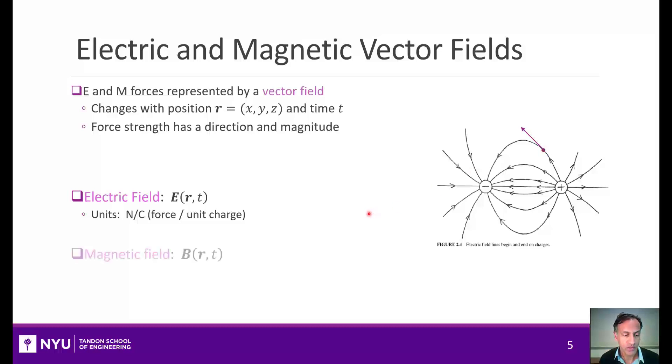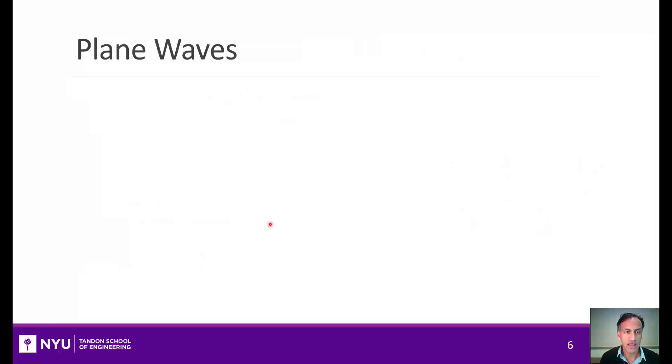Similarly, the magnetic field operates or acts upon moving particles and it's the force per unit charge per unit velocity. So it has units of newtons per ampere meter or teslas. And they have the notation E and B, so you'll often hear them called the E field and the B field.